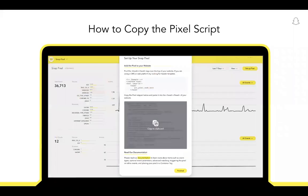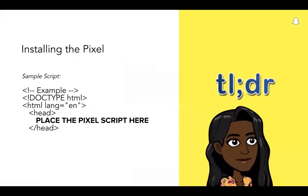Thanks, Tyler. Once you have created your SnapPixel, you can select the setup pixel and the pixel script will be displayed in a pop-up window, as you can see on the screen. You can copy the script by hovering the mouse cursor over the script and selecting Copy to Clipboard. This will copy the entire SnapPixel code, which you will then need to paste into your website's code and customize it for your needs. To install the SnapPixel, the pixel script you copied should be added directly to the HTML source code on your site. Find the head tags near the top of the website's HTML code. The head tags contain all the scripts that you would use on your website, like tags from other platforms too. If you're using a content management system or a web platform, try looking for the header template or the header includes file, which will contain these head tags.